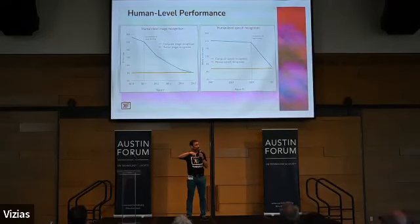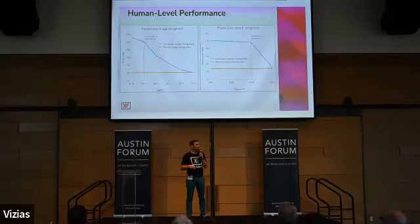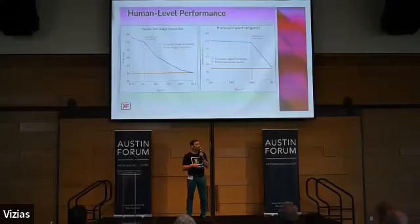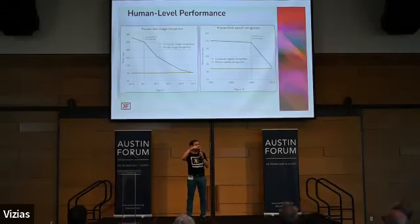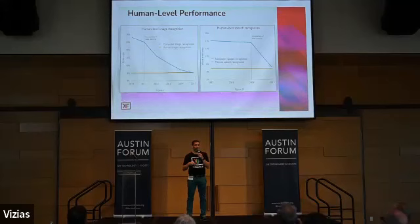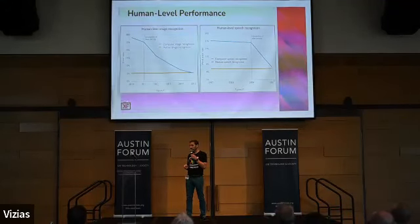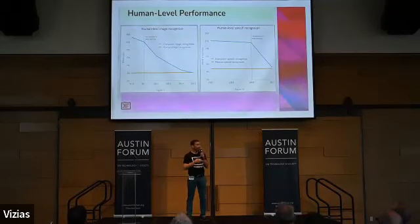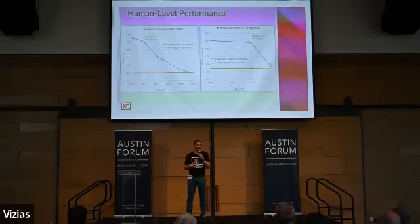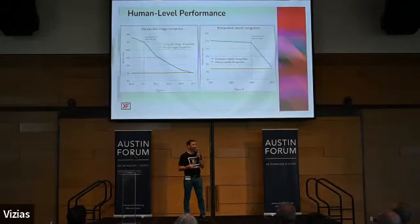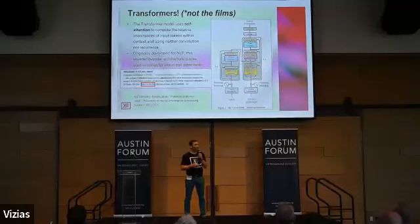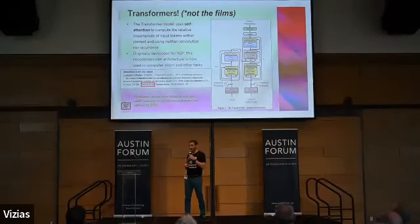Over time these types of neural networks have done really well. Looking at error rate plots where lower is better, the yellow line represents human performance. For image recognition on the left figure, once deep learning was introduced around 2011, things got better and better. By around 2015 deep neural networks were basically as good as humans at many kinds of image recognition. The same trend holds on the right for speech recognition.